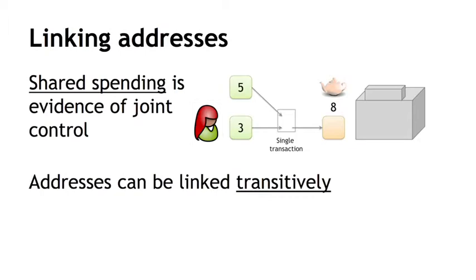We'll see later that an anonymity technique called CoinJoin works by violating exactly this assumption. But if you assume that people are just using regular Bitcoin wallet software without doing anything special on top of it, then this technique tends to be pretty robust. This has been explored in a variety of research papers.